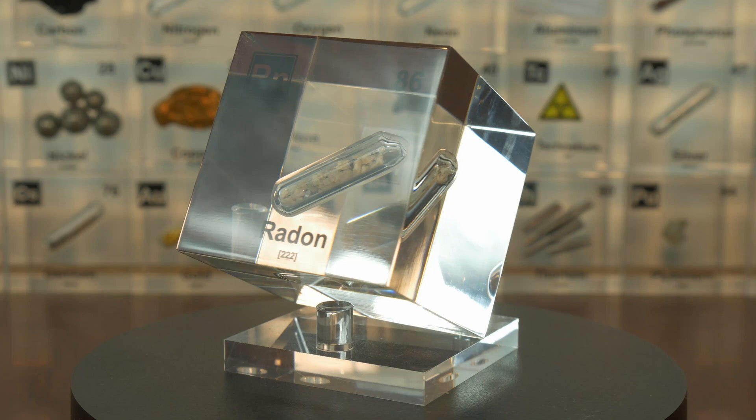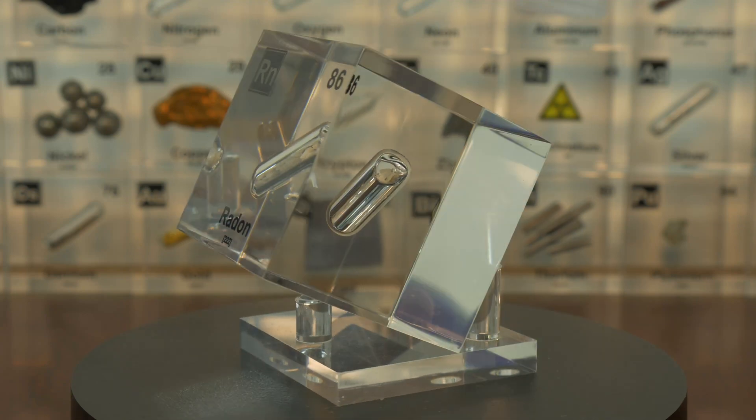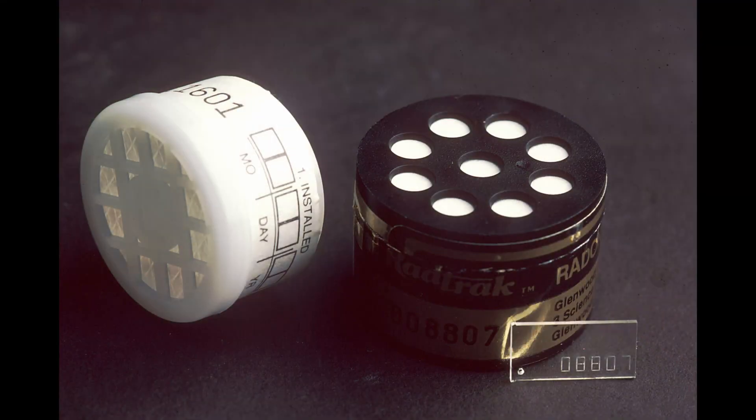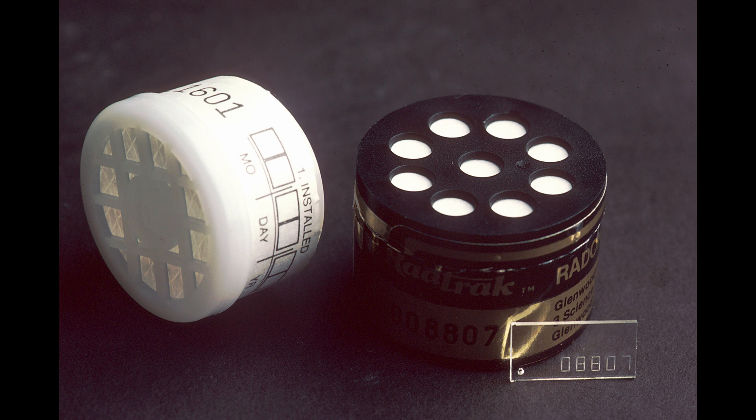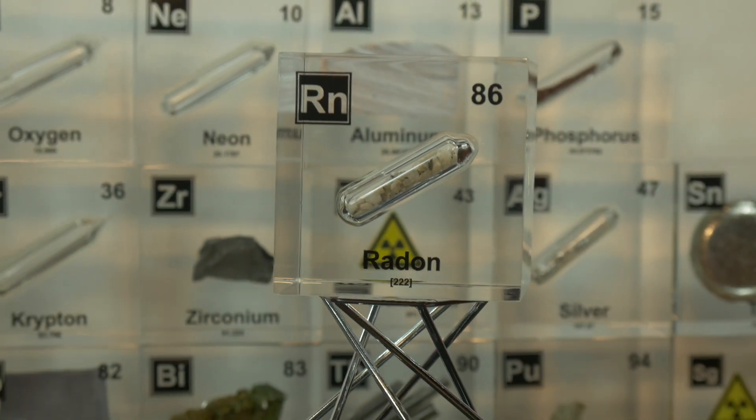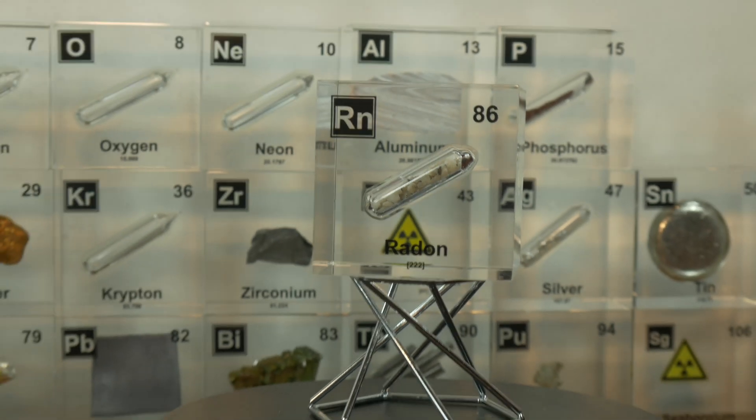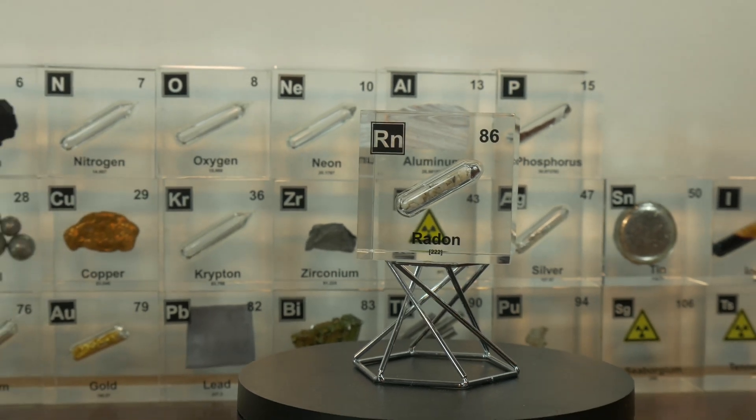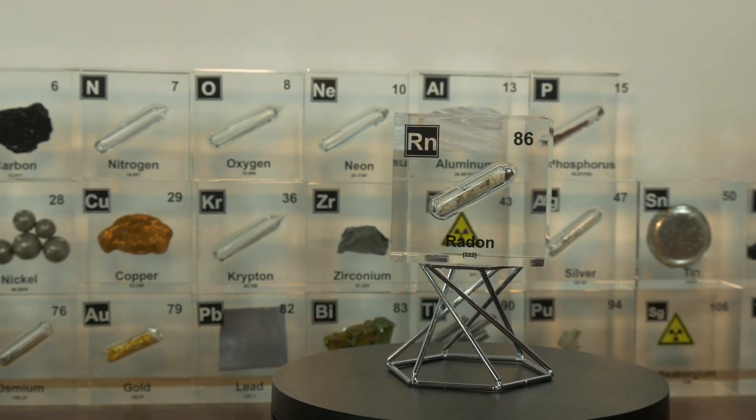Fortunately, radon is detectable with relatively simple tools. Home testing kits are widely available and measure radon levels over several days. If high levels are detected, mitigation strategies, such as improved ventilation and sealing off the cracks, can effectively reduce radon concentration.